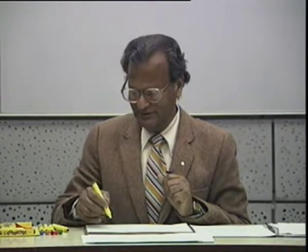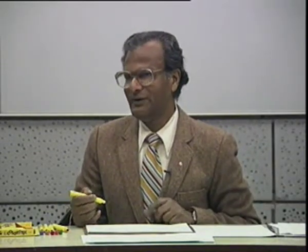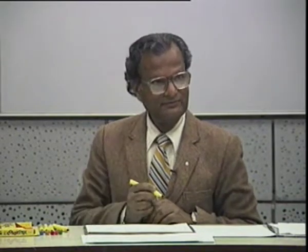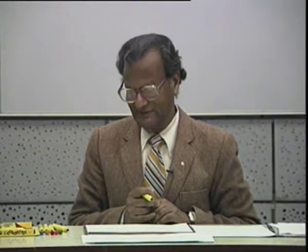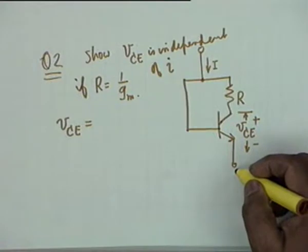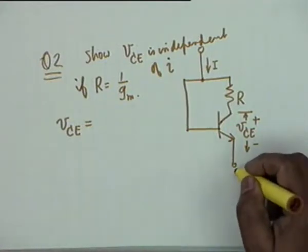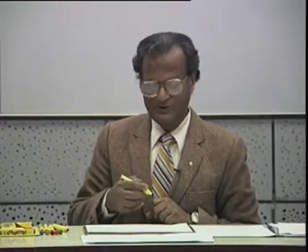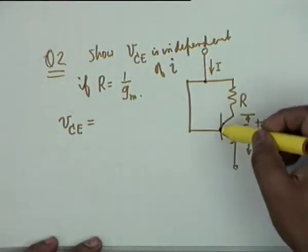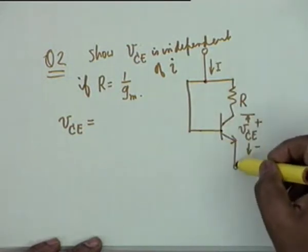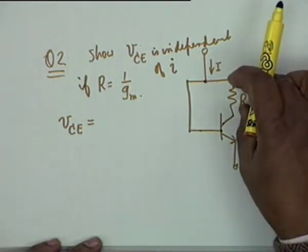VCE equals VBE minus the drop in R. Assuming beta much greater than 1, the base current is negligible so the current through R is approximately I. Writing total voltages: VCE (total) = VCB_DC + small VCE, and VBE (total) = VBE_DC + small VBE. Since the circuit is linear, DC parts balance separately and AC parts balance separately.